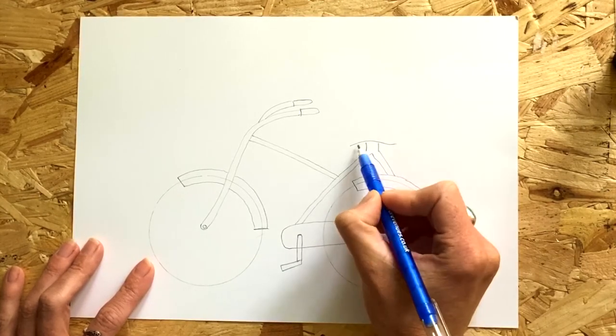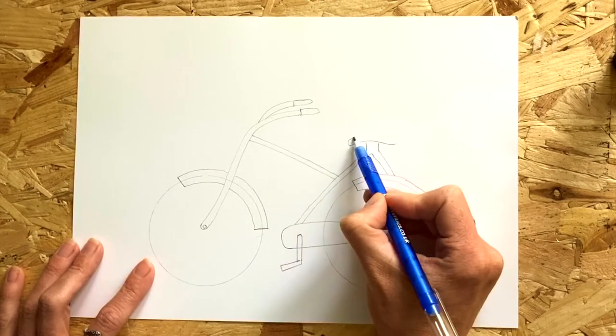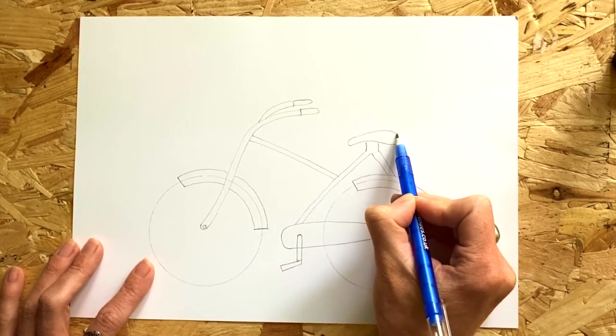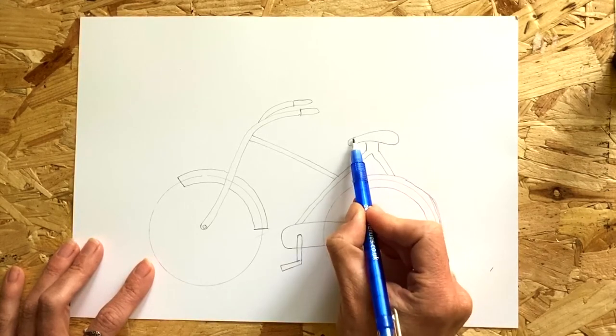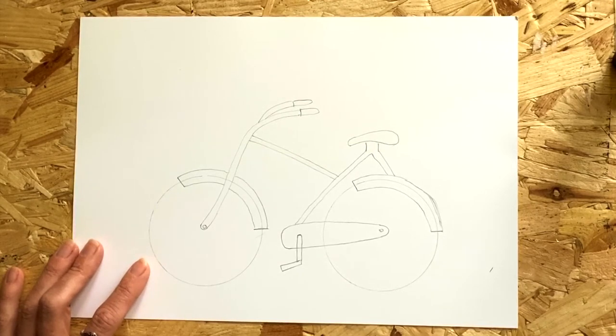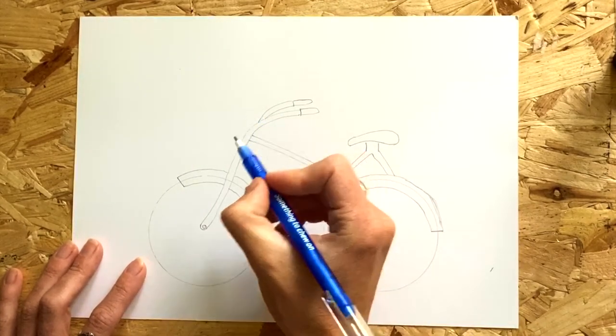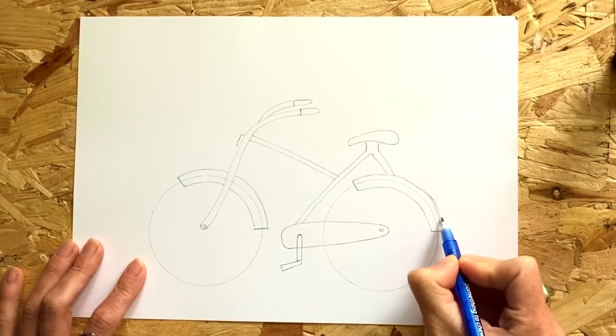Now start drawing a saddle. Simply draw a kind of wavy line and then a C shape and carry on that curve all the way until you get something that looks a little bit like a saddle. Add some little rectangles at the front and the back of your bike as reflectors.